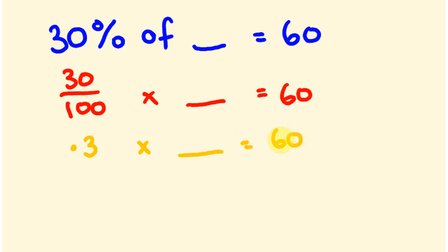So if we have this, we can now solve this question. We want to get this by itself, so we have to get rid of this 0.3 here. At the moment, this 0.3 is timesing by this number, so we have to divide both sides by 0.3.